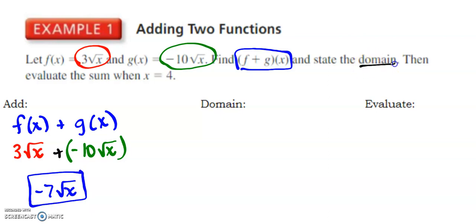I'm supposed to state the domain. Well, if I think about the domain of 3√x, I can take the square roots of 0 and all positive numbers, and that graph has not been shifted. This will just be a vertical stretch of 3, so that's not going to affect the domain. This one, I can also take the square root of numbers 0 to infinity. Multiplying by -10 does not change the set of inputs. Well, both of these have the same domain. So when I add them together, the domain is 0 to infinity.